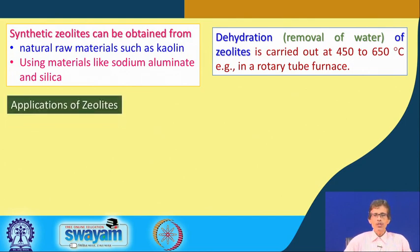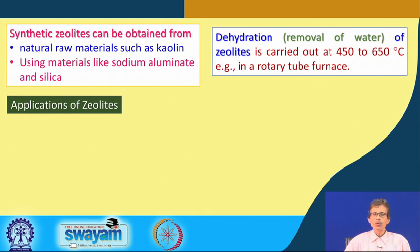Once we have these two types - one naturally occurring and the other synthetically prepared - we can think of their different types of applications which will be very useful to know. Once you know the applications of these zeolites we can also assess the demand in the industry and think of making new types of zeolites, because already some of these zeolite preparations are patented and are still used by industry people for making some useful compound.